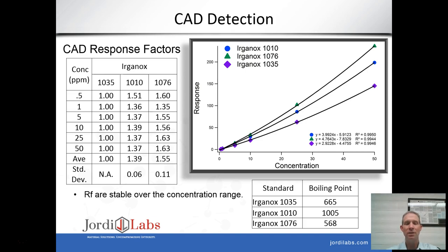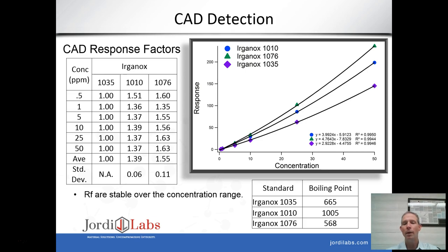For the CAD detector, the response factors were 1, 1.5, and 1.6 for the three Ergonox compounds — again off by as much as 60% depending on which compound is used as the surrogate. Looking at variation as a function of concentration, the variability was minimal: for Ergonox 1010 the standard deviation was 0.06, and for 1076 it was 0.11 — relatively small, less than 10% in both cases, indicating pretty consistent response factors. This partly results from the consistent boiling point for these compounds; a highly volatile compound could show a much larger change in response factor with CAD. Knowing that your compounds are non-volatile is therefore important for CAD relative quantitation.